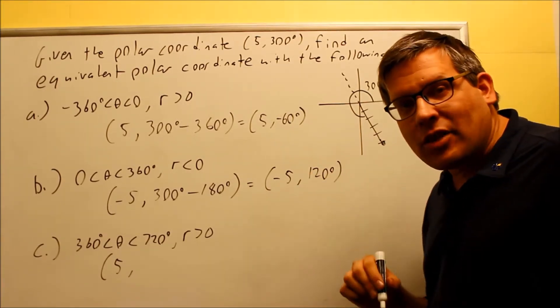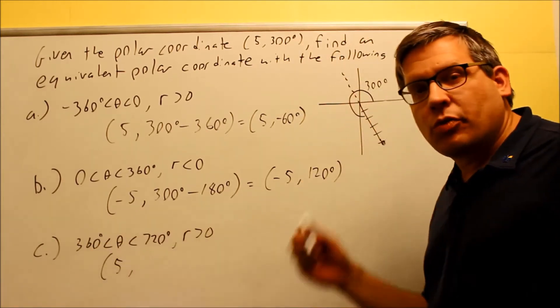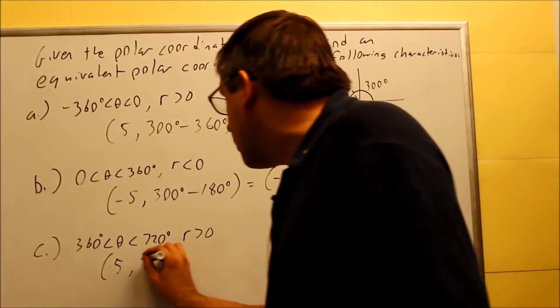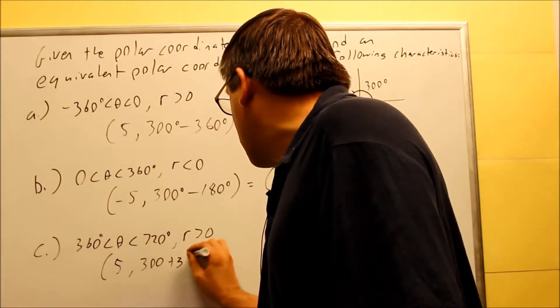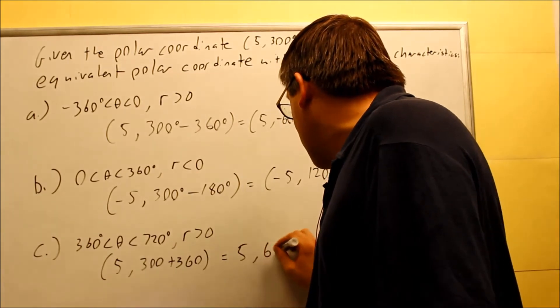Definitely this time, we want to add 360 because I want that angle to end up between 360 and 720. So I'm going to do 300 plus 360. And if I do that, it gives me 5 and 660.